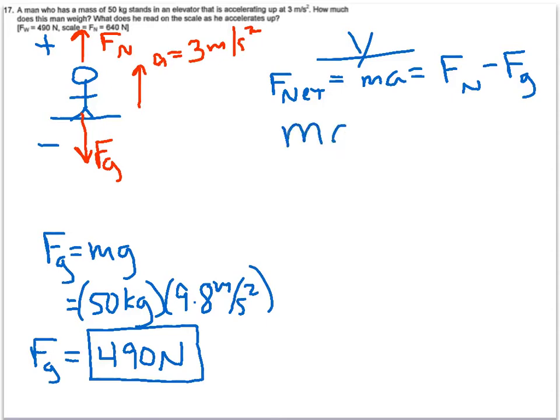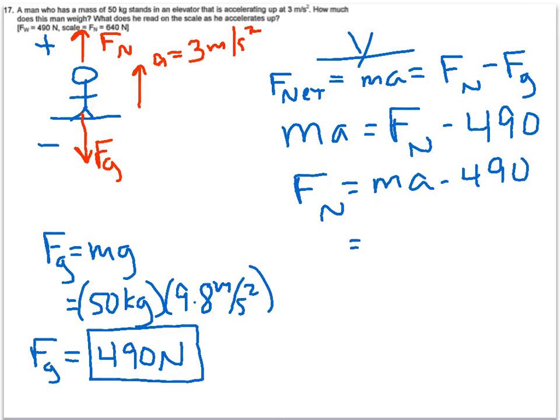Alright, so to do that, we will now say ma equals fn minus our force of gravity is 490 newtons. We're looking for fn, so fn will equal ma plus 490.